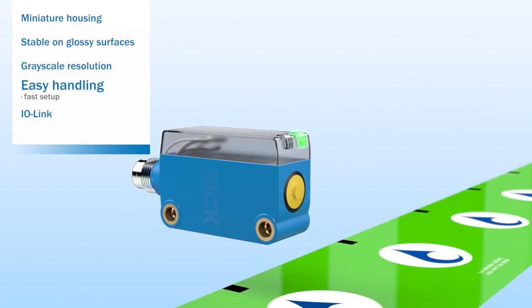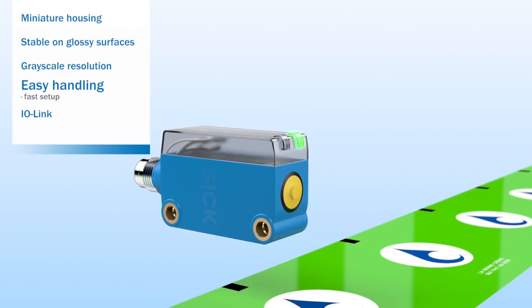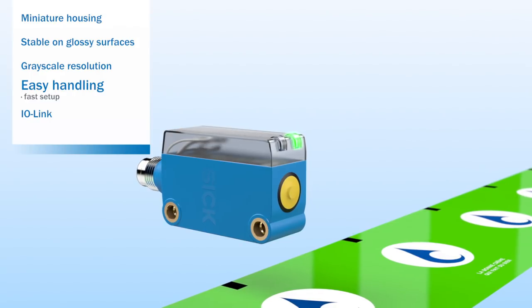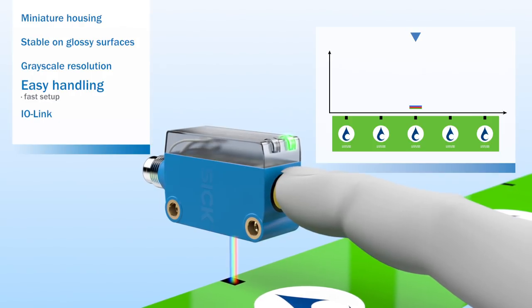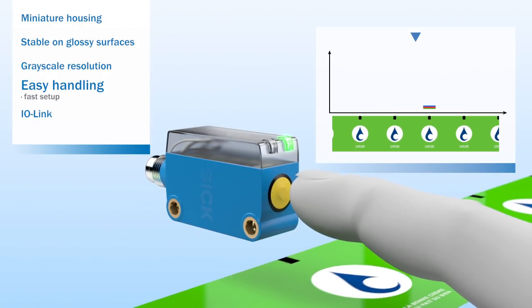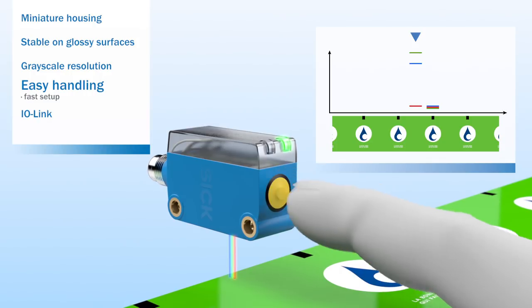The operating concept of the KTM is straightforward and intuitive. The two-point teach-in method captures the three-color technology mark and background and automatically selects the LED light color which delivers maximum contrast.